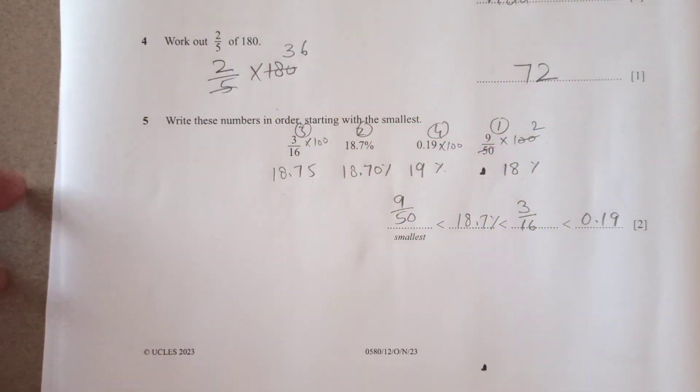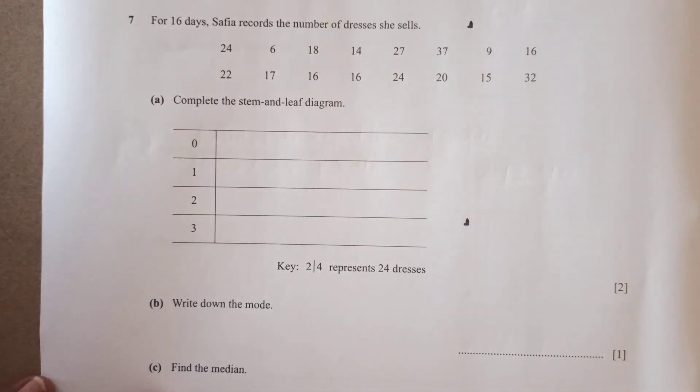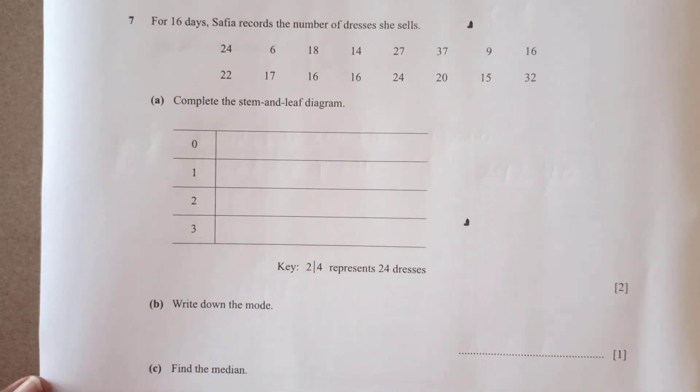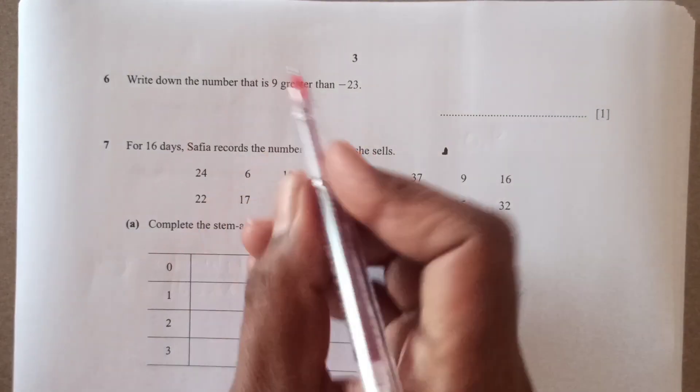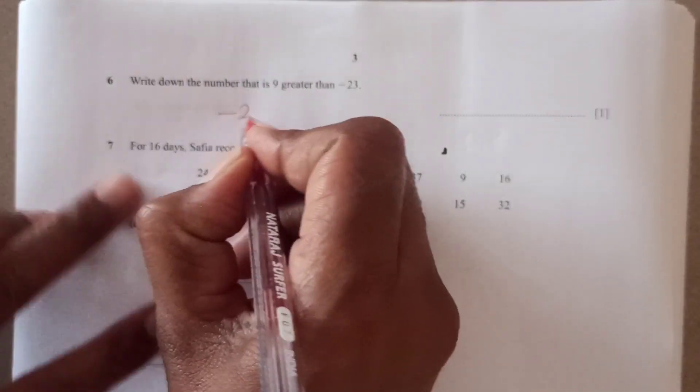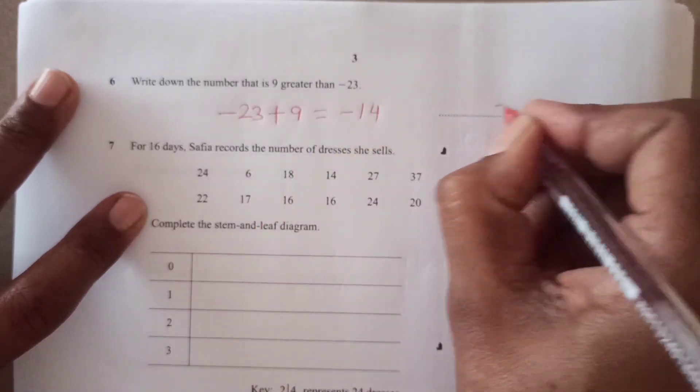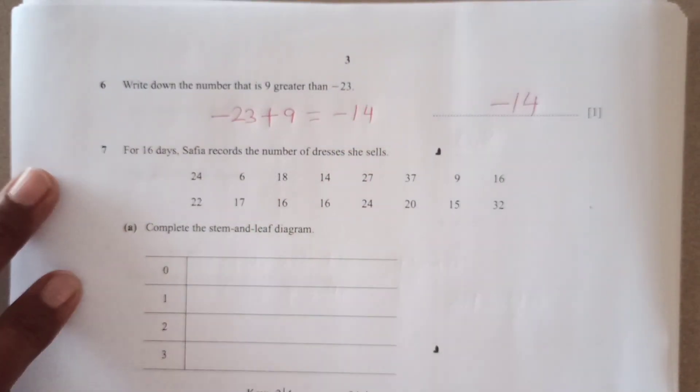Now let's see the next one. Question number six here. We have write down the number that is 9 greater than negative 23. So negative 23, 9 greater means plus 9. So this is going to be negative 14. Very simple question.